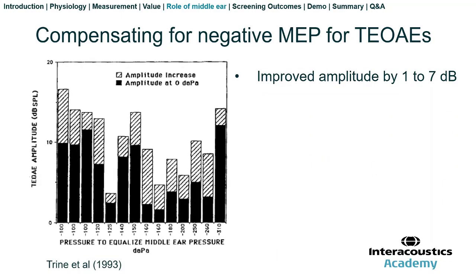Trine et al. in 1993 studied the effect of negative middle ear pressure below minus 100 daPa, also looking at the effect of compensating for that pressure. Relative to ambient pressure, the overall level of the emissions improved by about 1 to 7 dB by compensating for negative middle ear pressure. Each black bar represents the level for different pressures across individuals, and the shaded bars show an increase in overall response with compensation. The improvement was somewhat variable in magnitude but consistent across their subjects. They also found an improvement in reproducibility when they compensated for negative middle ear pressure.